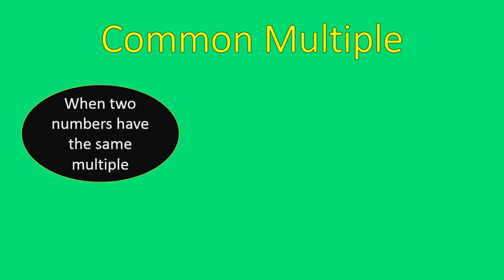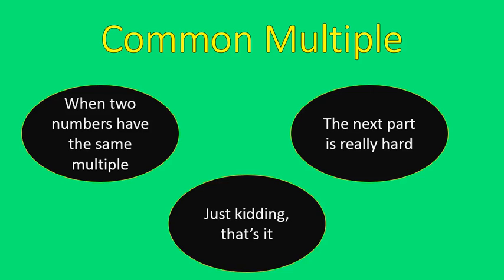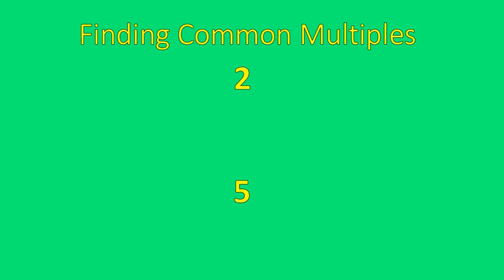So let's switch gears a little bit and talk about common multiples. Common multiples are when two numbers have the same multiple. That's really all it is — it's two numbers that have the same multiple. Pretty straightforward. Let's work on it.